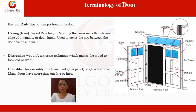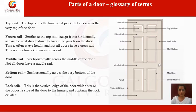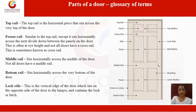Door lights can be seen in both doors and windows. Moving on to parts of a door: top rail, freeze rail, middle rail, bottom rail, and lock stile. The top rail is the horizontal member at the very top of the door.